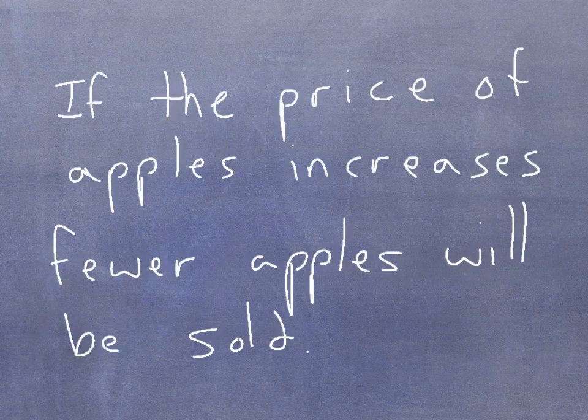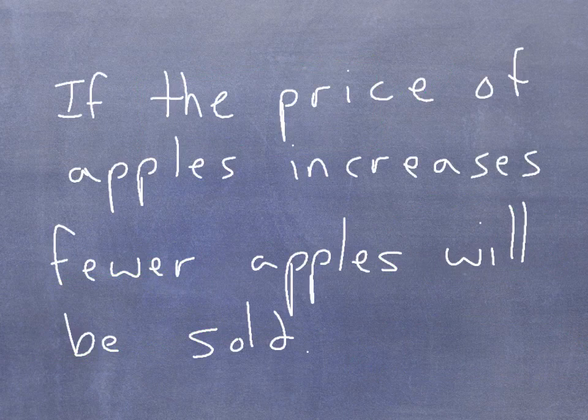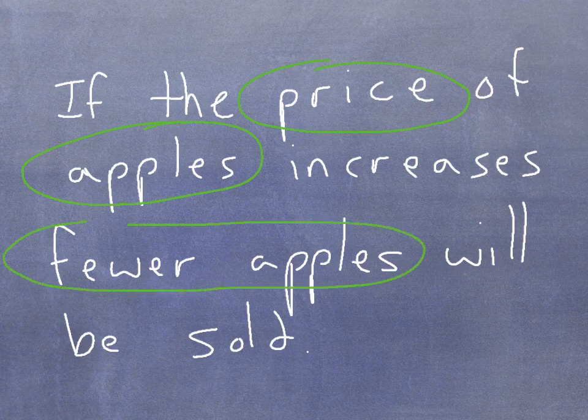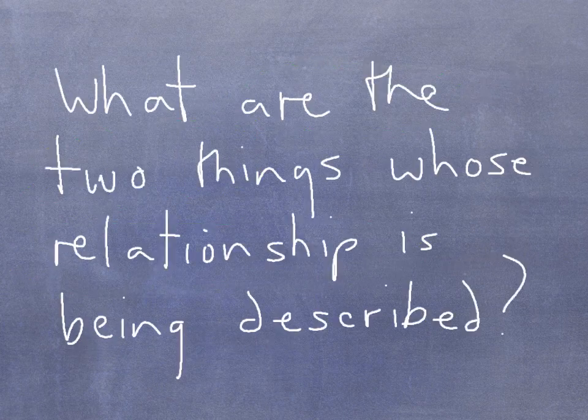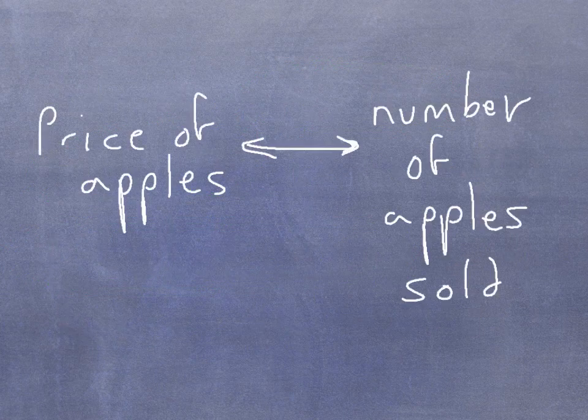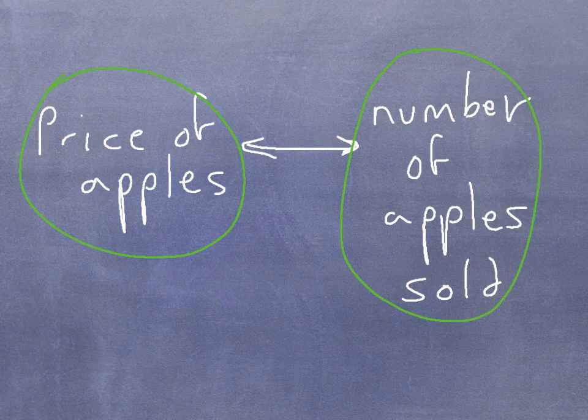Now let's look at another positive statement. If the price of apples increases, fewer apples will be sold. Again, we see that this is looking at the relationship between the price of apples on the one hand and the number of apples sold on the other. So once again, the two things being looked at are the price of apples and the number of apples sold. And this is what tells us that this is a positive statement.